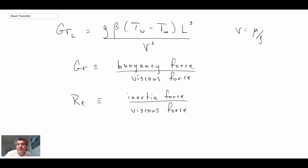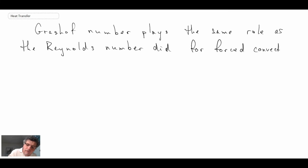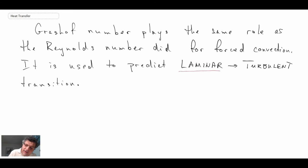So the Grashoff number is a non-dimensional number that we use quite often for natural or free convection. And it plays a very similar role to the Reynolds number for forced convection over flat plate flow, in that it is giving us an indication of when we will transition from a laminar free or natural convection flow to a turbulent free or natural convection flow.